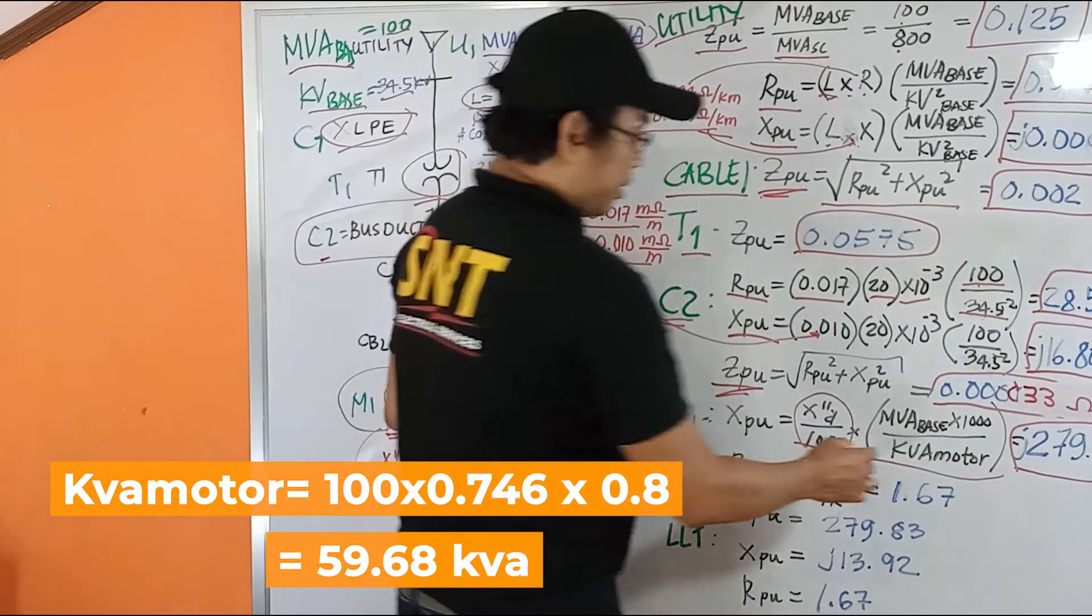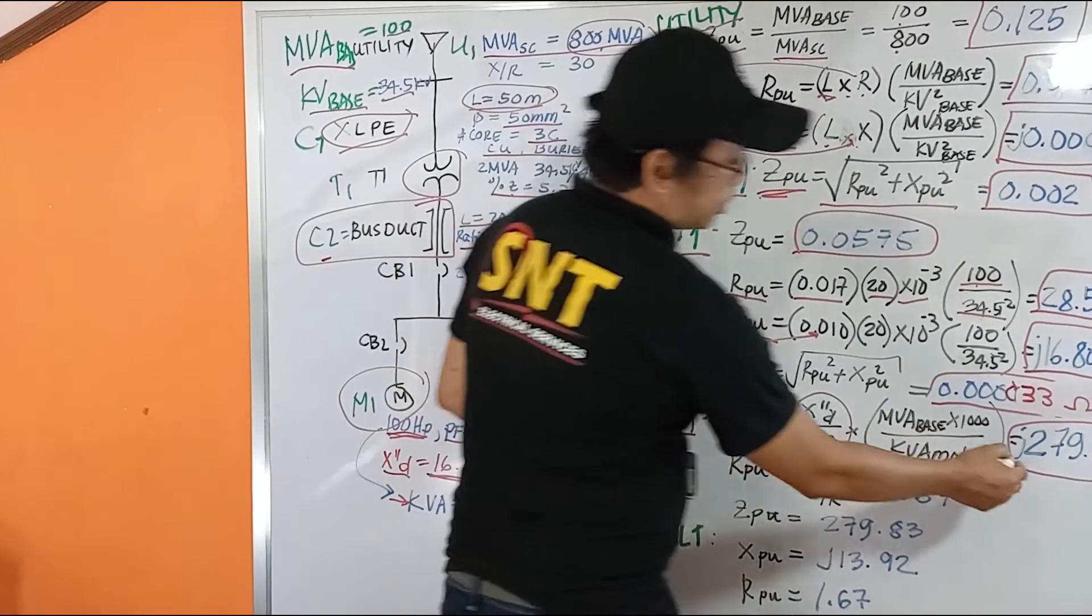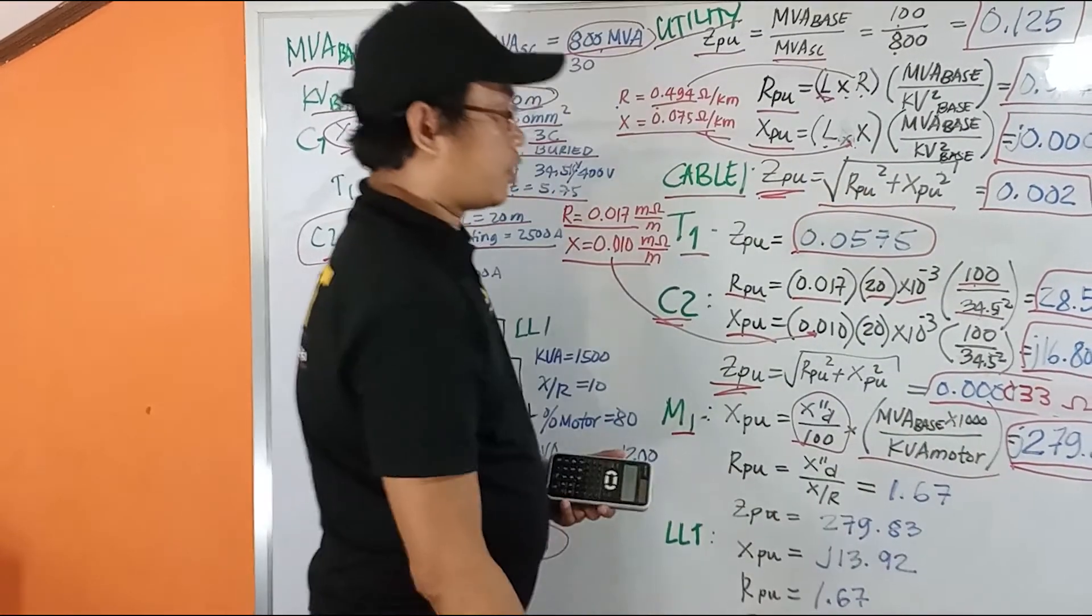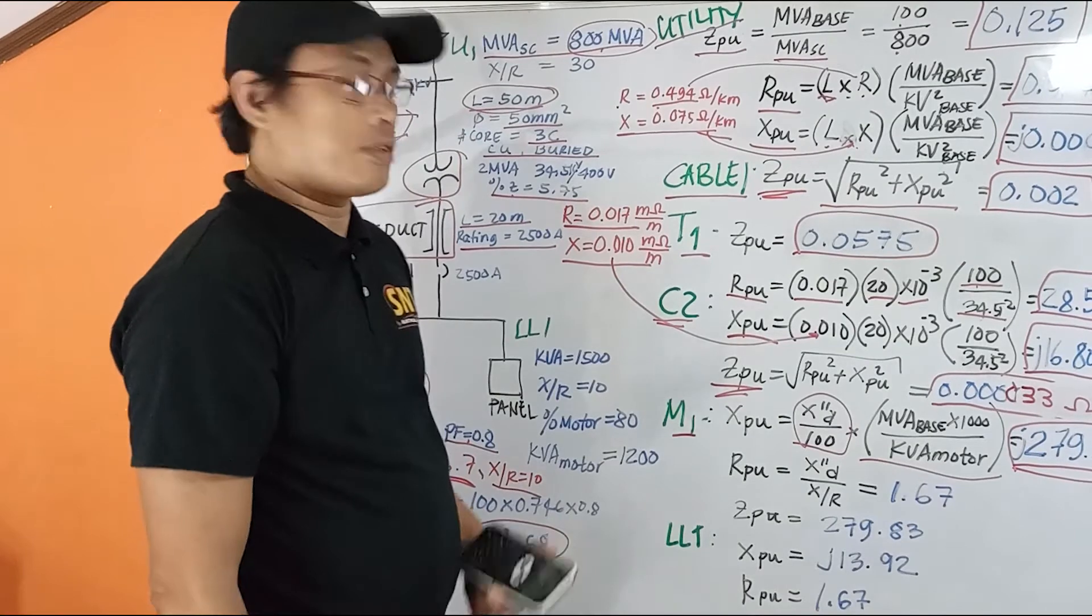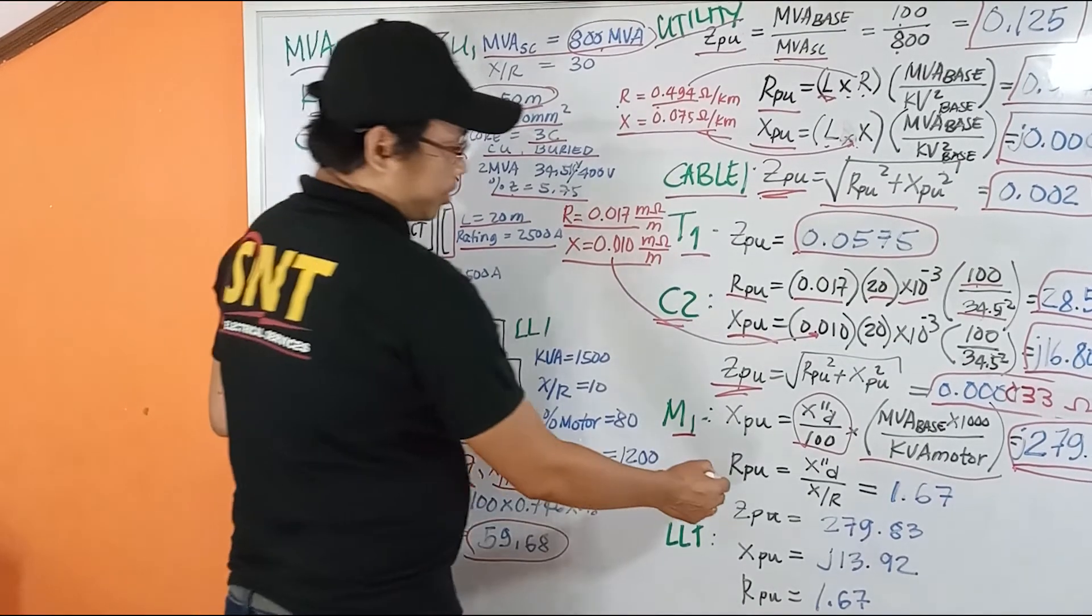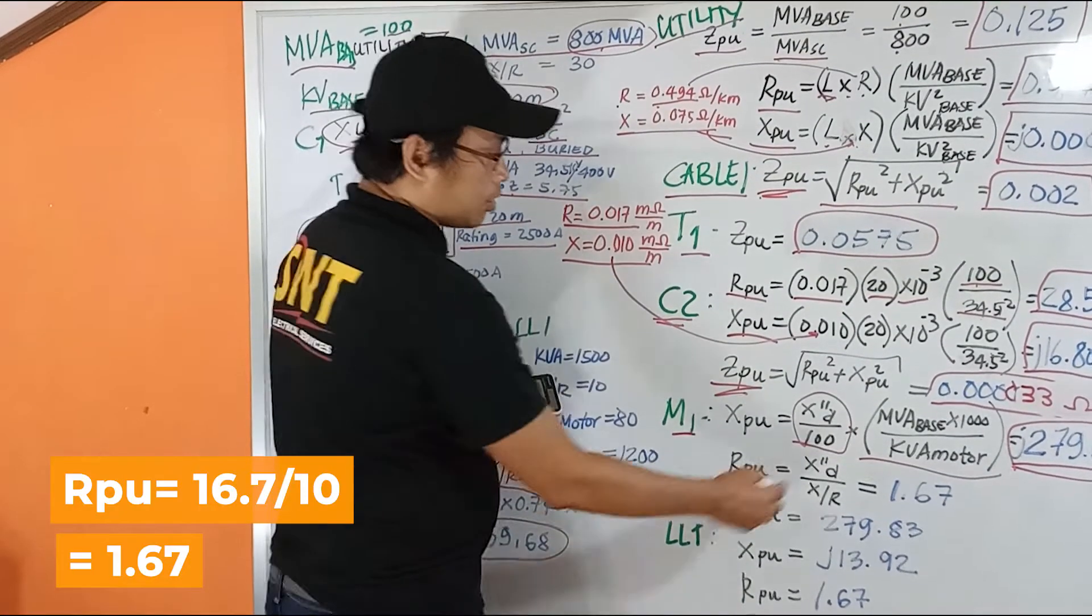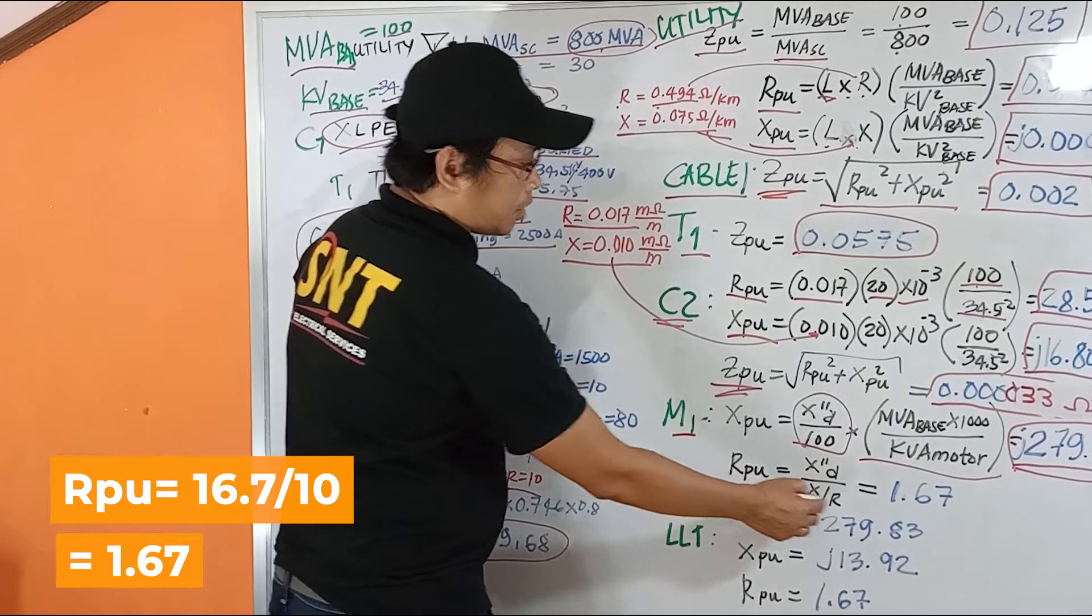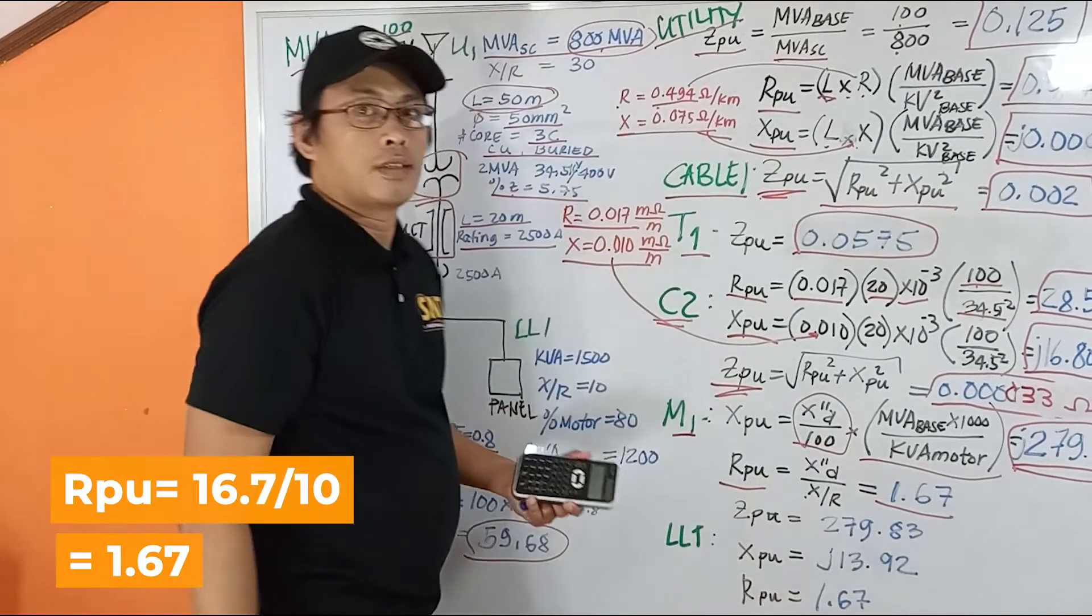Given a power factor of 0.8, which results in 259.68, we result in this value: 279.83. The resistance per unit is also X'D over XR is 1.67.